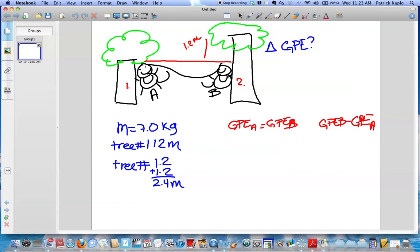So to start off, we're going to write GPE is MGH at A, which equals MGH at B. The mass is given, which is 7.0. We're going to multiply that by 9.8, which is always G, times the height of tree number 1, which is 1.2 meters.